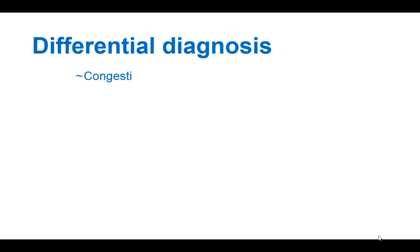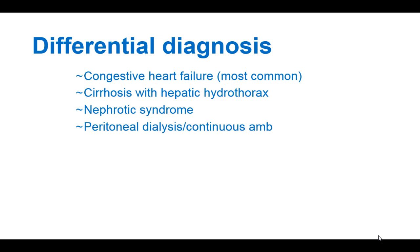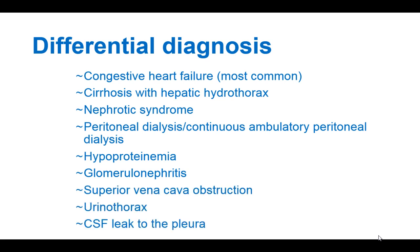The differential diagnoses that may come up when diagnosing this patient include congestive heart failure, liver cirrhosis with hepatic hydrothorax, nephrotic syndrome, peritoneal dialysis or continuous ambulatory peritoneal dialysis, hyperproteinemia, glomerulonephritis, superior vena cava obstruction, and cerebrospinal fluid leakage into the pleural space.